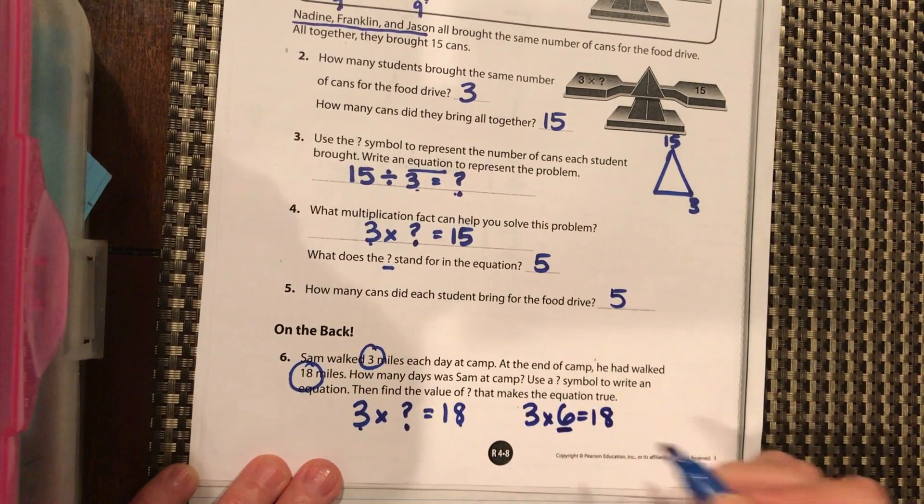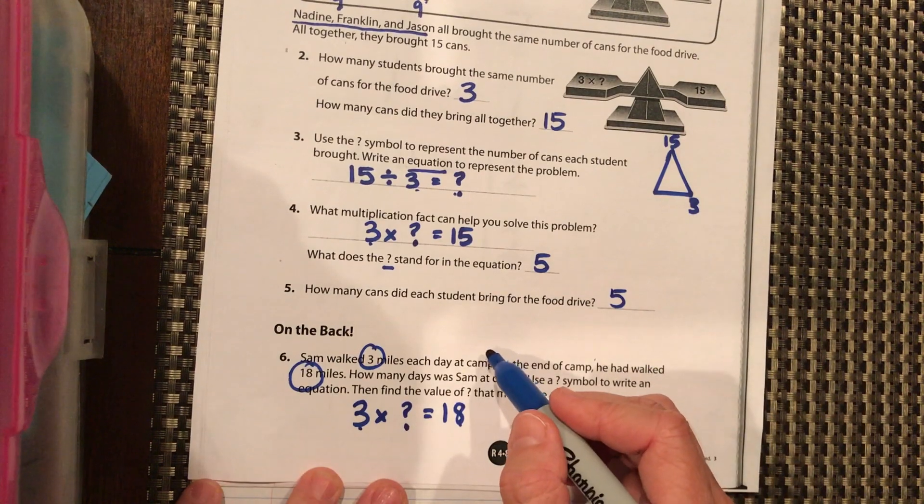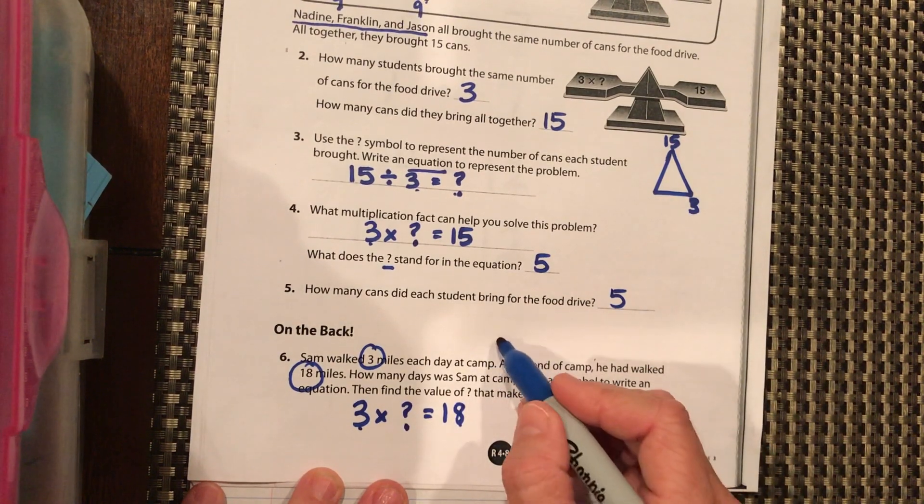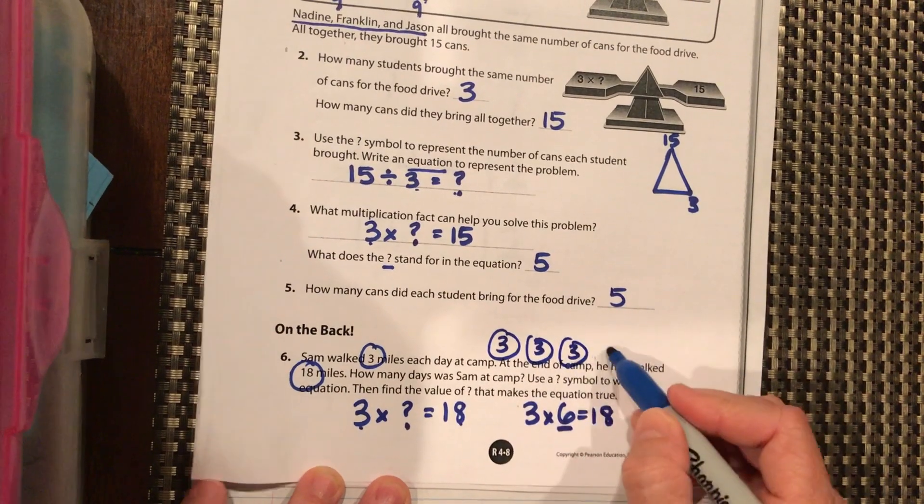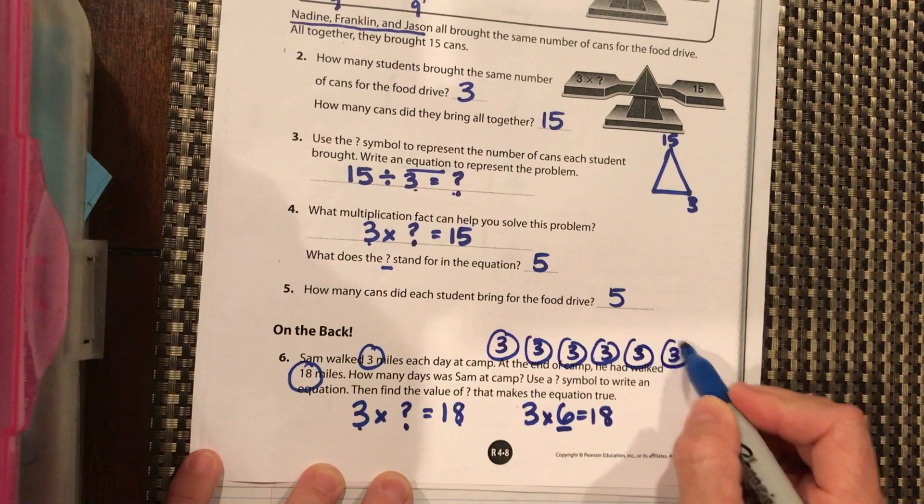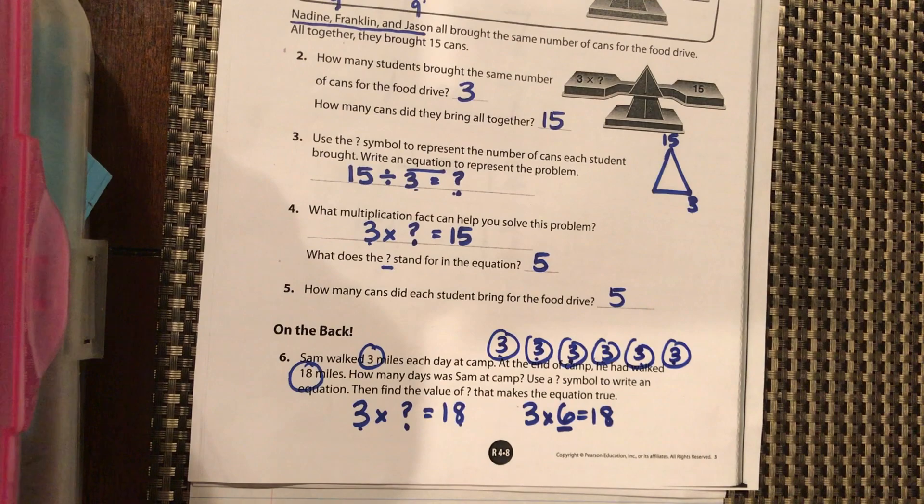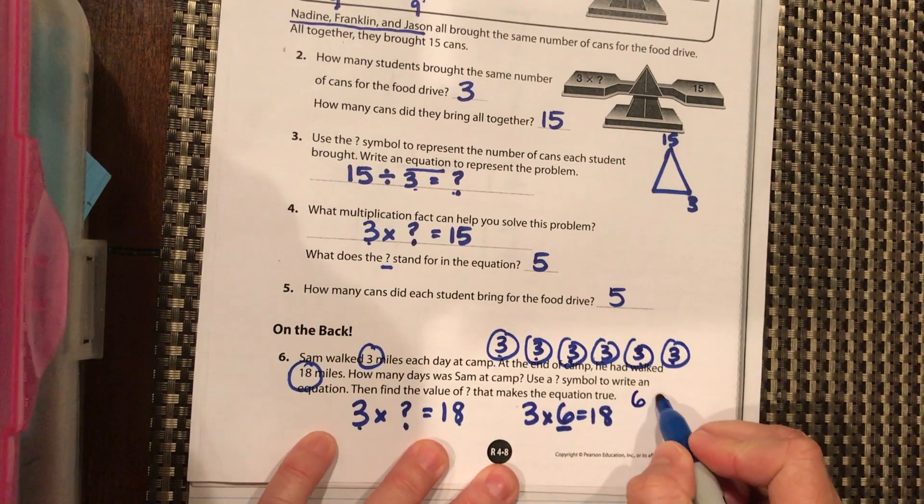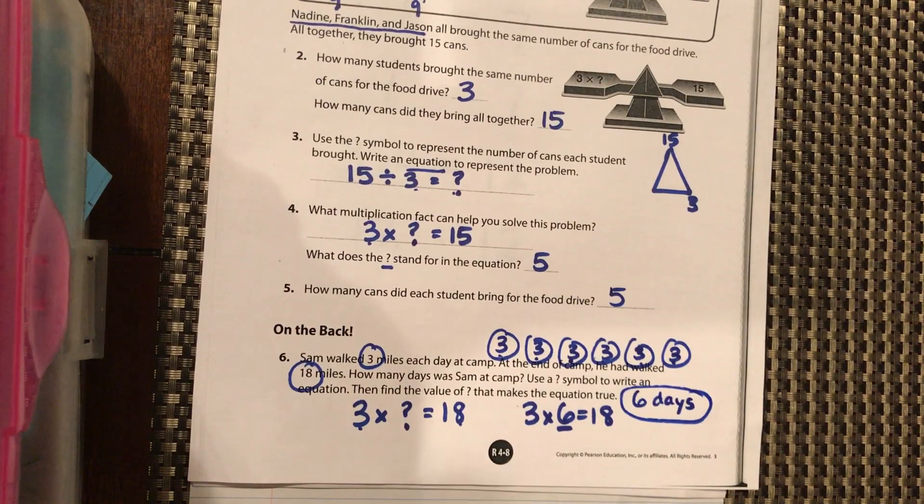So check and make sure that makes sense. If he was there six days, it would be three days and three days—day one, day two, day three, day four, day five, and day six. Nine and nine, nine plus nine is 18. So he was there a total of six days. Good job.